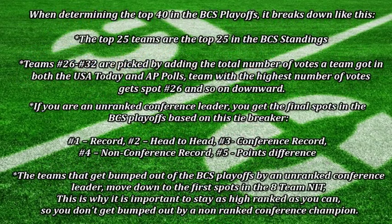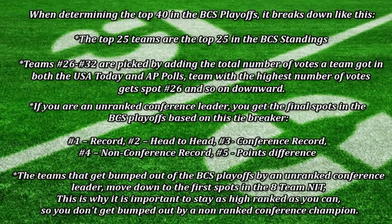Here's how it works. The top 40 in the BCS playoff breaks down like this: the top 25 teams are the top 25 in the BCS. If you're good enough to be ranked in the top 25, you're good enough to be a national champion. How you find teams 26 through 32 — those are picked by adding the total number of votes a team gets in the USA Today and AP polls, with the highest number of votes getting spot 26, next highest getting 27, and downward. If you're an unranked conference champion, you automatically get a berth to the BCS playoffs.